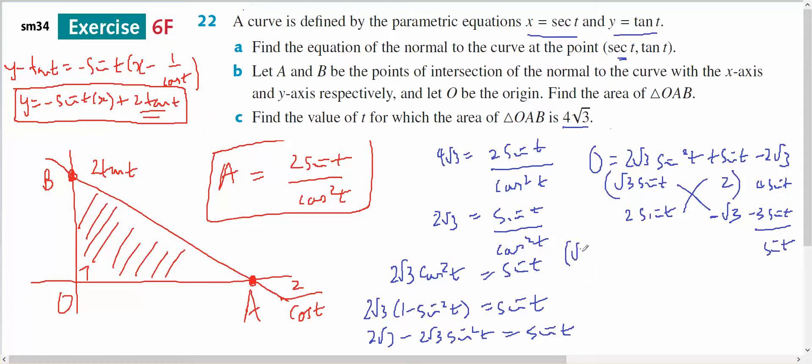So I've got root 3 sine of T plus 2, and 2 sine of T minus root 3 equals 0.